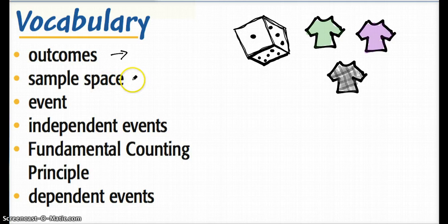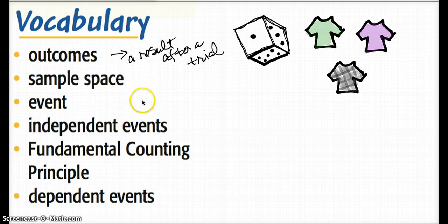The sample space for the die would be six different things. So outcome refers to just one thing that happens after a trial, and the sample space refers to all the total possible outcomes.